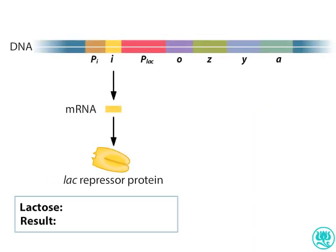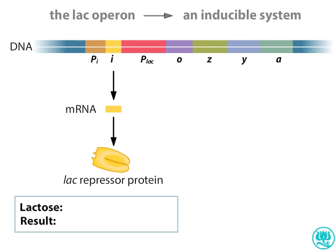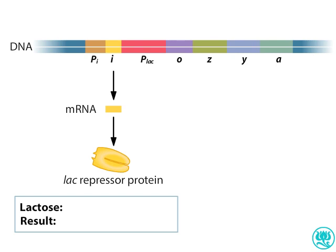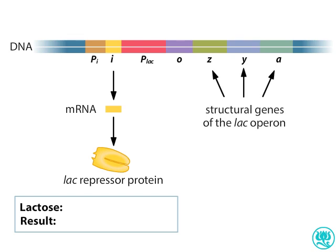The lac operon is an example of an inducible system in which the presence of an inducer molecule, in this case derived from lactose, results in the expression of the structural genes in the operon. The structural genes are lacZ, lacY, and lacA — genes that can be transcribed into mRNA and translated into protein.